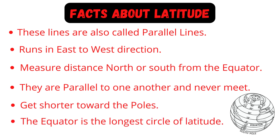Key facts about latitude: First, these lines are also called parallel lines. Second, they run in an east to west direction. Third, they measure distance north or south from the equator. Fourth, they are parallel to one another and the equator, and they never meet. Fifth, they get shorter towards the poles — both the South Pole and the North Pole.